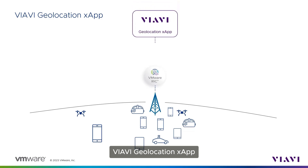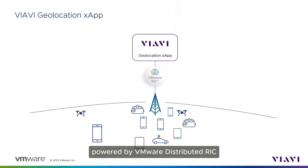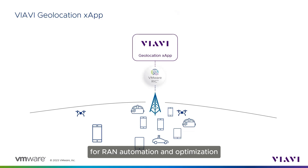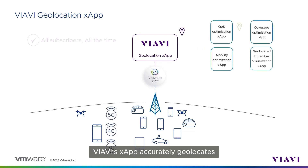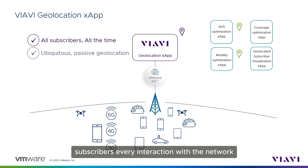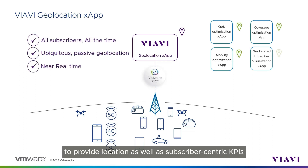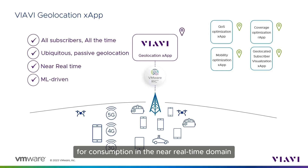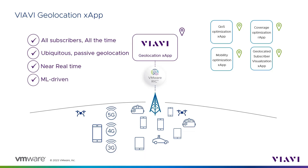VIAVI Geolocation XApp, powered by VMware Distributed RIC, unlocks the power of location intelligence for RAN automation and optimization. VIAVI's XApp accurately geolocates subscribers at every interaction with the network to provide location as well as subscriber-centric KPIs for consumption in the near real-time domain.